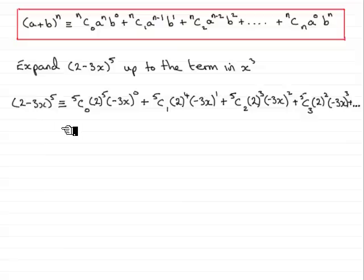Okay? So, all we need to do now is just simply work this out. Now, 5c0 is 1. And, 2 to the power of 5 is 32. And, anything here to the power of 0 is 1. So, all we get is 32.